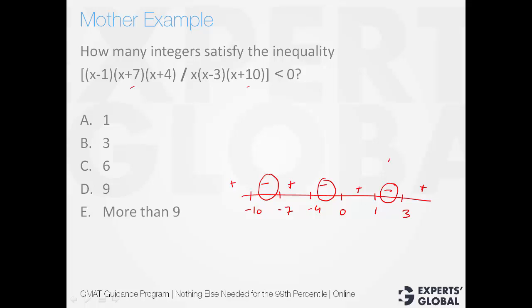The question is how many integers would satisfy this? Between 1 and 3, it's only 1 integer, 2. Between minus 4 and 0, 3 integers: minus 3, minus 2, minus 1. Between minus 10 and minus 7, 2 integers: minus 8, minus 9. So in all, 2 plus 3 plus 1, 6 integers satisfy this condition.